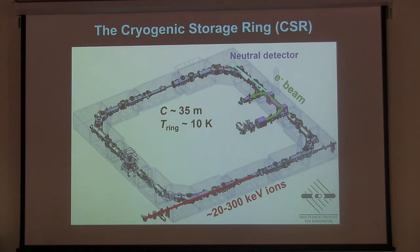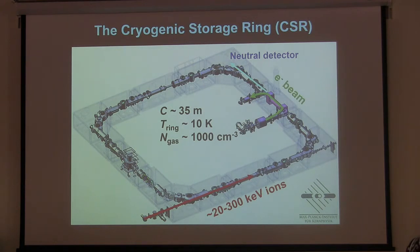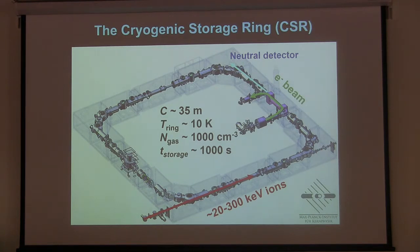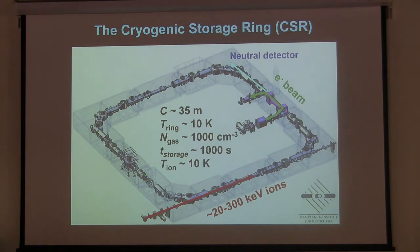This 35-meter ring shrinks by something on the order of 10 centimeters when cooled. All of the ion optics have been designed to maintain their exact position as the ring shrinks around them — it's an engineering marvel. At such low temperatures the vacuum walls become cryopumps, pumping residual gas molecules, and they can get to densities on the order of a thousand particles per cubic centimeter. Ions can be stored for times up to a thousand seconds, giving any ion that has a dipole moment time to come into radiative equilibrium with the blackbody of the chamber walls, so the ions cool down to temperatures on the order of 10 Kelvin.